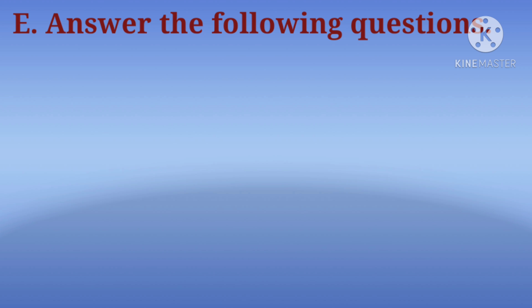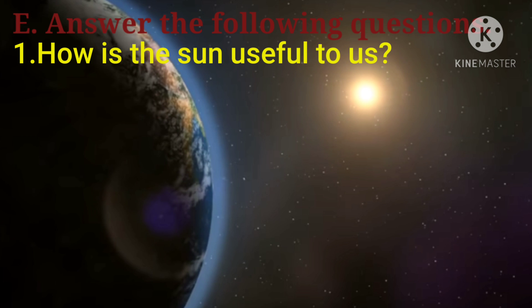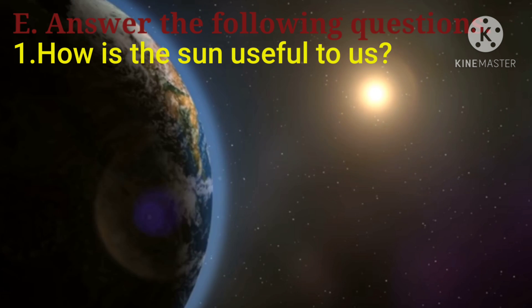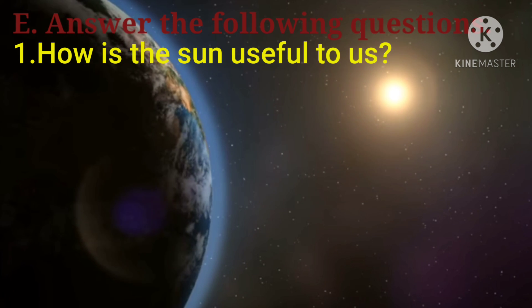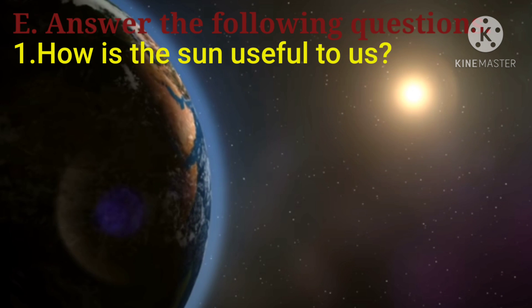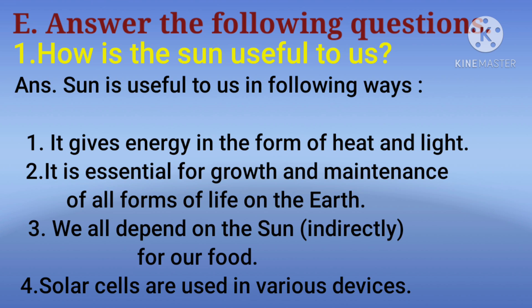First question is, how is the sun useful to us? Ki sun humare liye kaise useful hai? Answer is, sun is useful to us in the following ways. Number one, it gives energy in the form of heat and light. Number two, it is essential for growth and maintenance of all forms of life on earth.